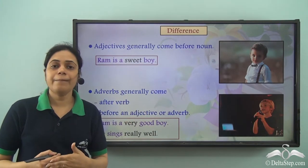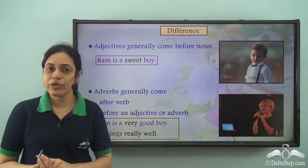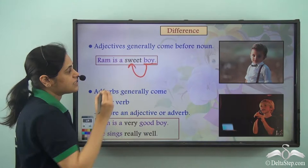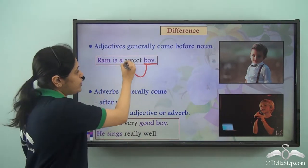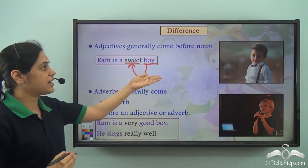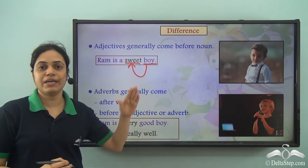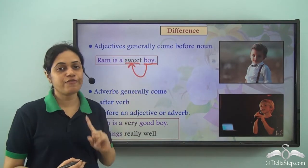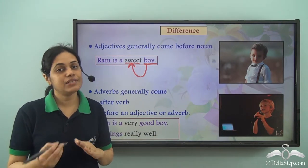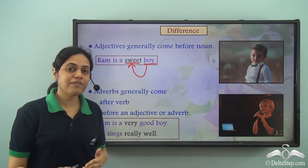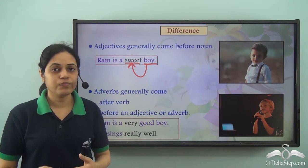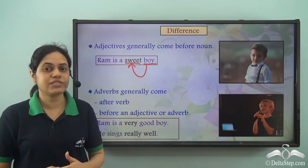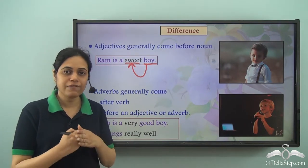Adjectives generally come before the noun. In 'Ram is a sweet boy,' boy is a noun and sweet is the adjective describing it — sweet comes before the noun boy. However, this is not always true. In 'The sky is blue,' the word blue is an adjective which comes at the end of the sentence, not before the noun sky which it describes.